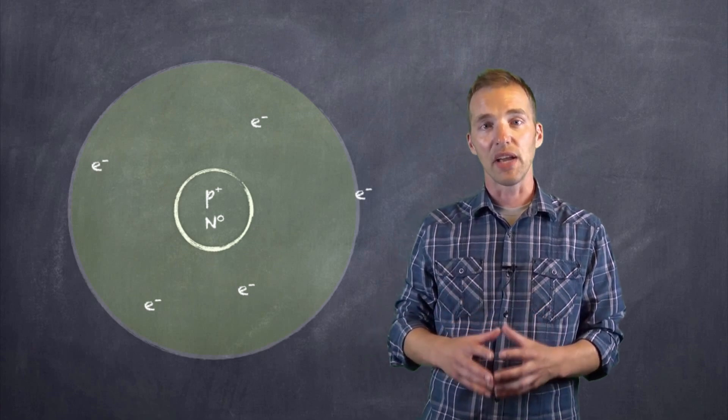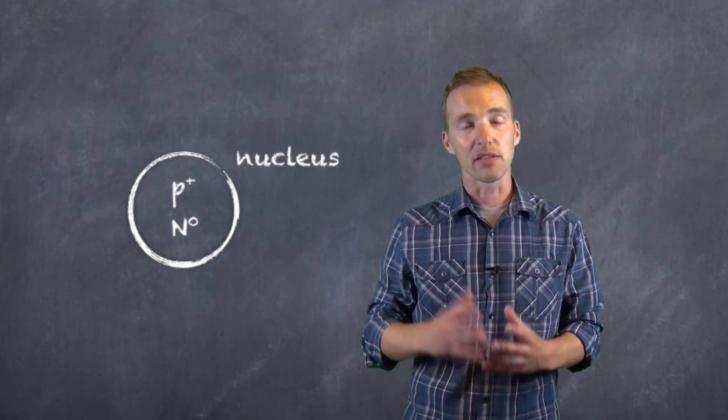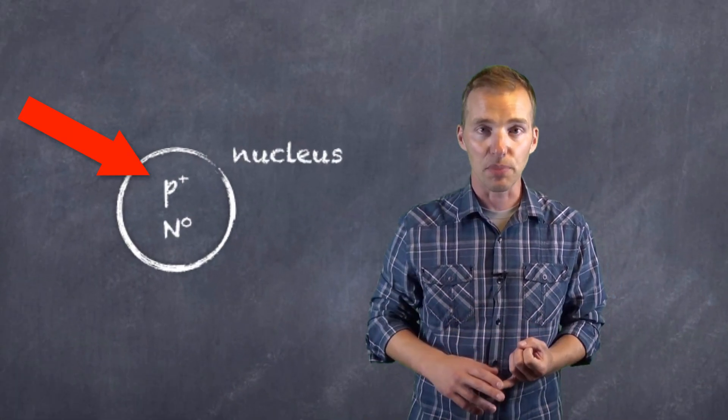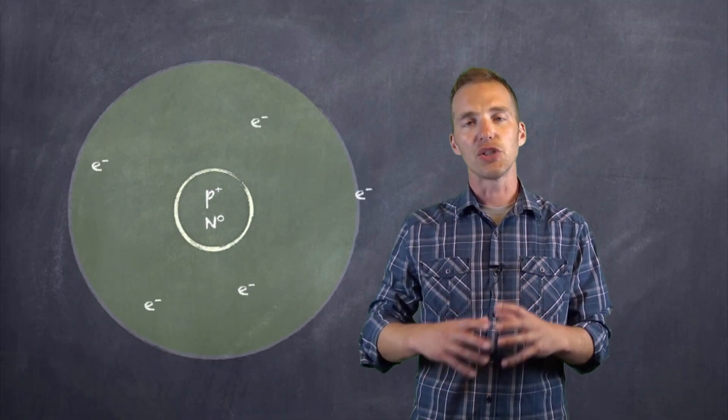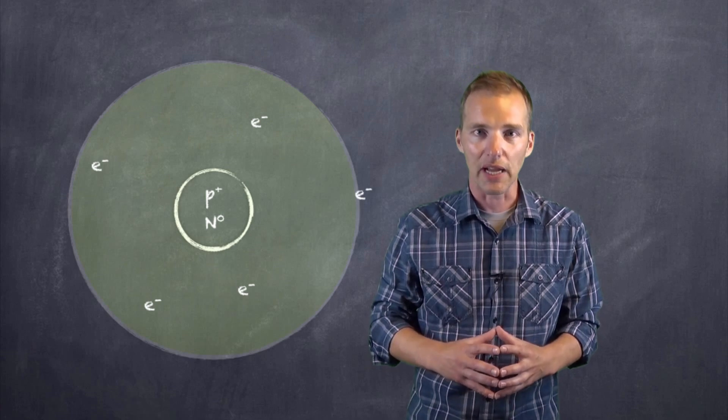Within the center we have a nucleus, and within this nucleus the subatomic particles are the positive protons and the neutral neutrons. As we move outside of this nucleus, we can see that it's surrounded by negatively charged electrons.